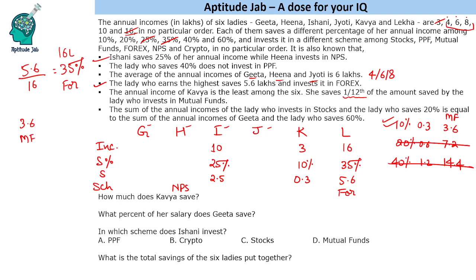Now we find who the mutual fund lady is. A person saving 3.6 lakhs could earn 6 lakhs at 60% savings rate (6 × 60% = 3.6). Since Hina invests in NPS, she cannot be the mutual fund investor. So the lady who earns 6 lakhs, saves 60%, and invests in mutual funds is either Gita or Jyoti — two possibilities for now.